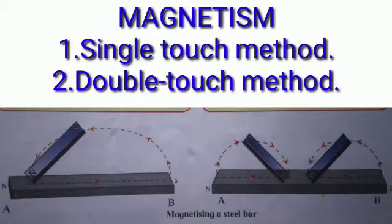The apparatus required for this experiment is steel bar, bar magnet, iron filings, thread etc. Now let's see first procedure. Place a steel bar AB. You can see on the screen two pictures are shown. So the first one you have to observe.